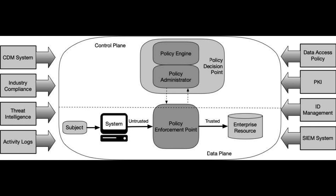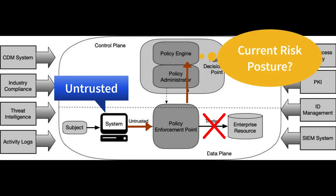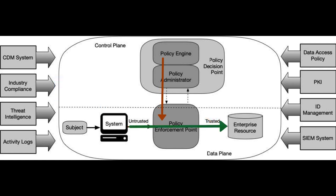Let's walk through a simple example. Our subject, with an authentication token for the network, wants to access the enterprise resource. The subject is initially assumed untrusted. The PEP blocks initial access, sending the request to the PDP. The PE looks at the information it has about the identity used by the subject and the resource, and determines if the subject can have access as well as the level of access. Since the subject is using a company-owned device on the company network, the subject device's health is fine, behavior is within acceptable parameters, and the subject's role allows it, the PE provides the PA with its risk assessment and access approval. The PA configures access with the full privileges granted to the user's business role. However, lesser privileges are likely if a subject, for example, is on a public network.